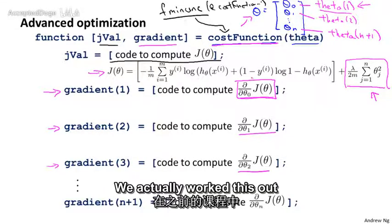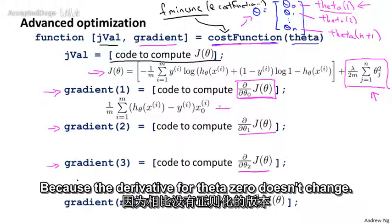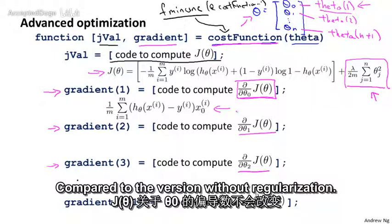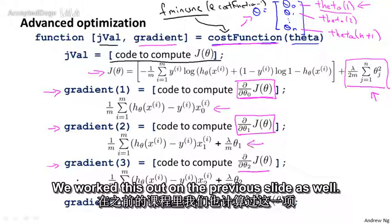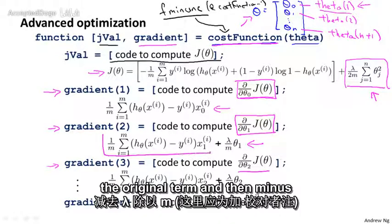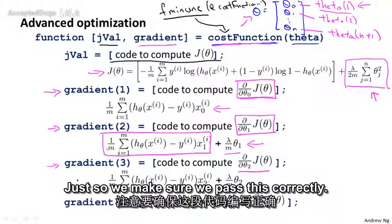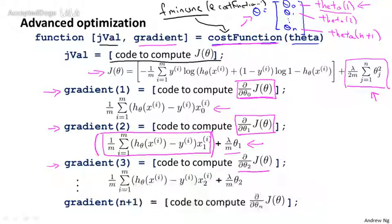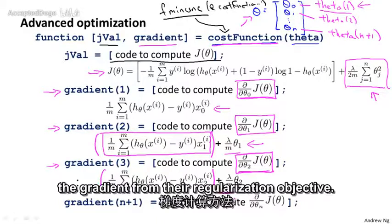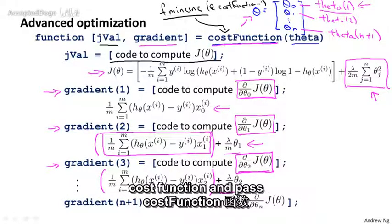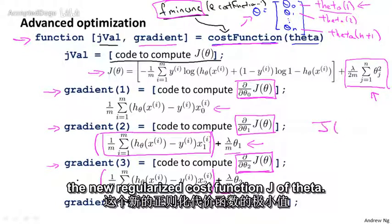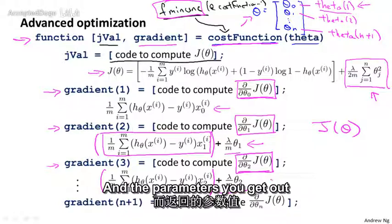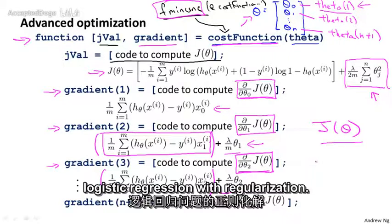And looking at these terms, this term over here we actually worked out on the previous slide. It doesn't change because the derivative for θ₀ doesn't change compared to the version without regularization. And the other terms do change, and in particular, the derivative with respect to θ₁ we worked out on the previous slide as well is equal to the original term minus λ/m times θ₁. Just so we parse this correctly, we add parentheses here so the summation doesn't extend. And similarly, this other term looks like this with this additional term that we had on the previous slide that corresponds to the gradient from the regularization objective. So if you implement this cost function and pass this into fminunc or one of those advanced optimization techniques, that will minimize the new regularized cost function J(θ), and the parameters you get out will be the ones that correspond to logistic regression with regularization.